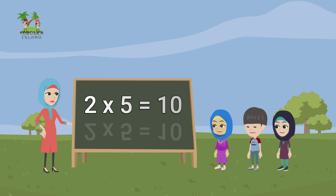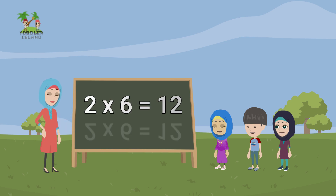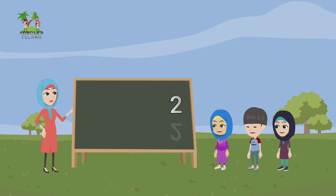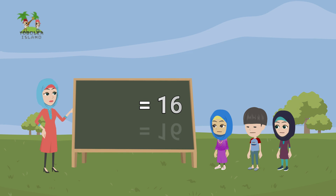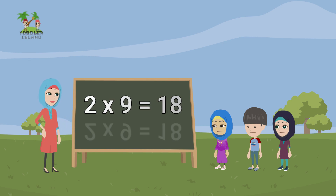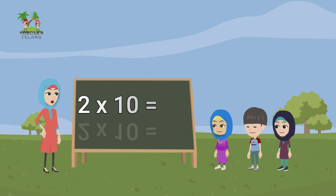Multiplying 2 by 5 results in 10. The product of 2 multiplied by 6 is 12. When you multiply 2 by 7, the result is 14. Multiplying 2 by 8 gives you 16. The product of 2 multiplied by 9 is 18. When you multiply 2 by 10, you get 20.